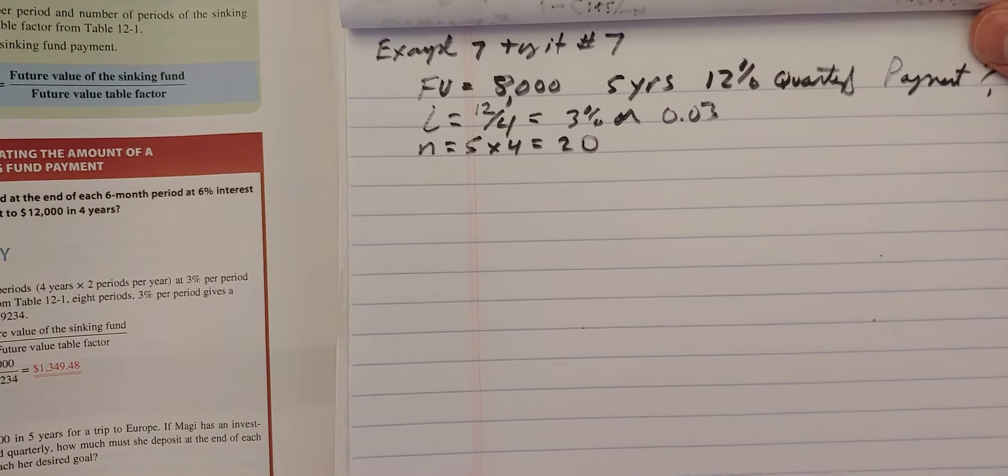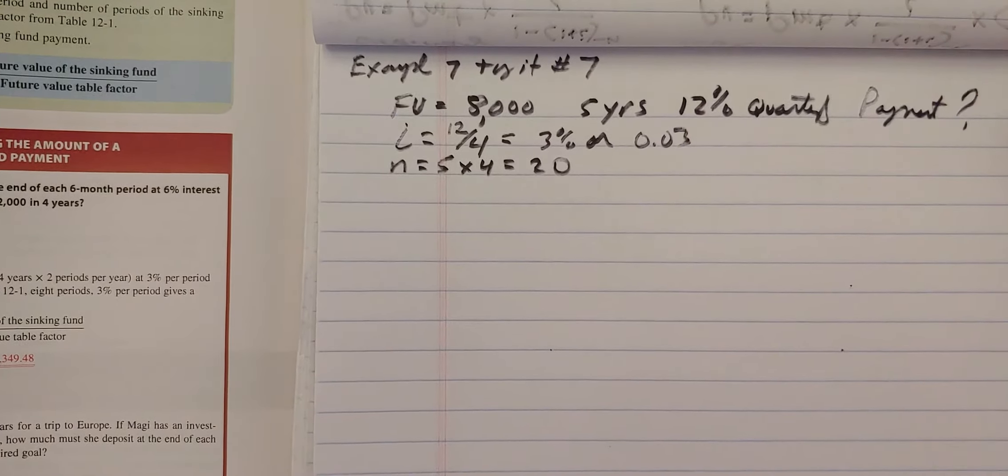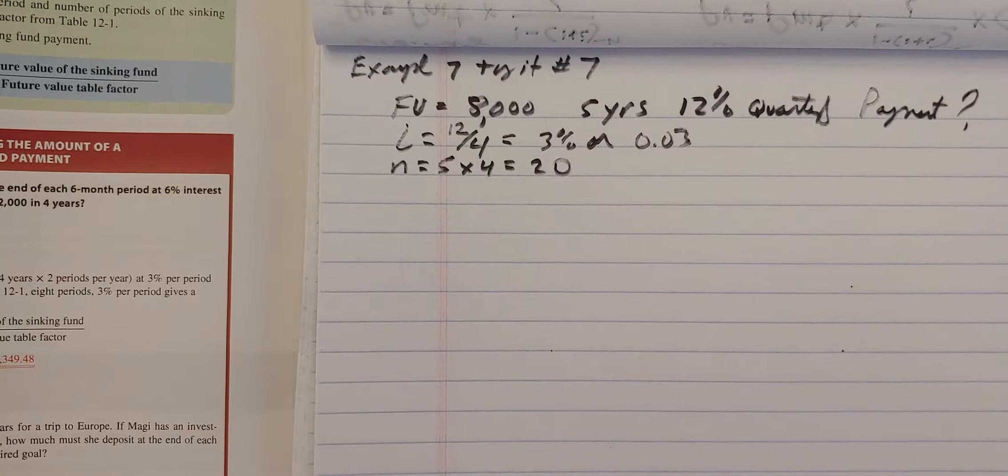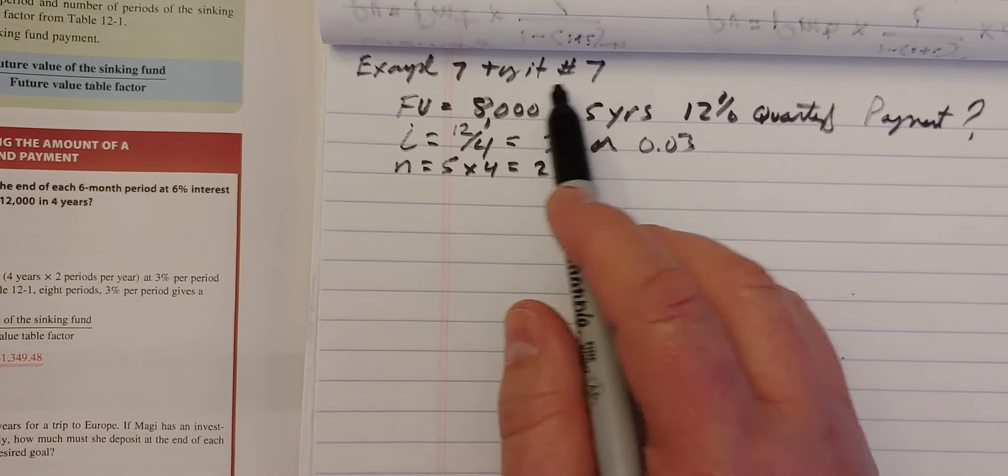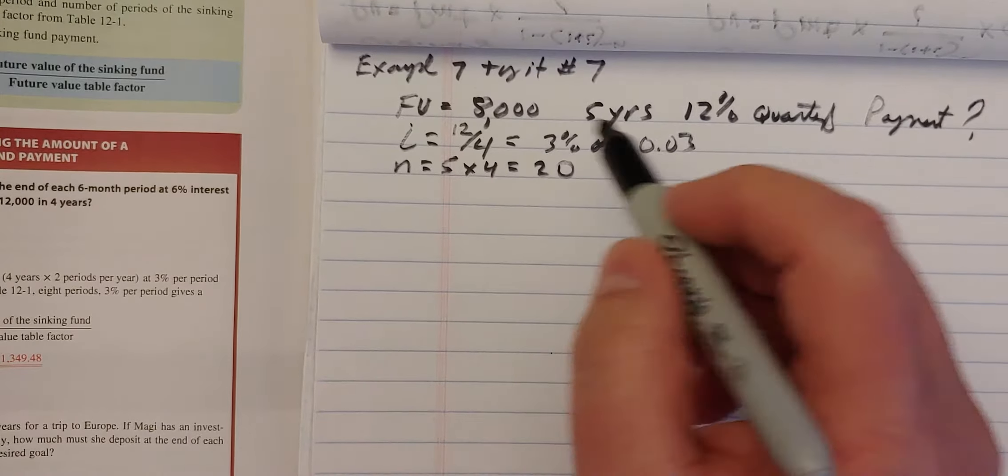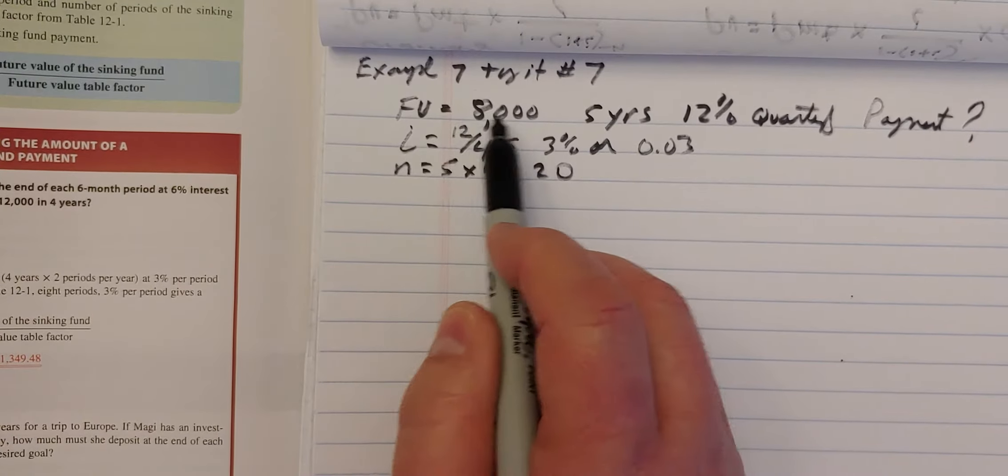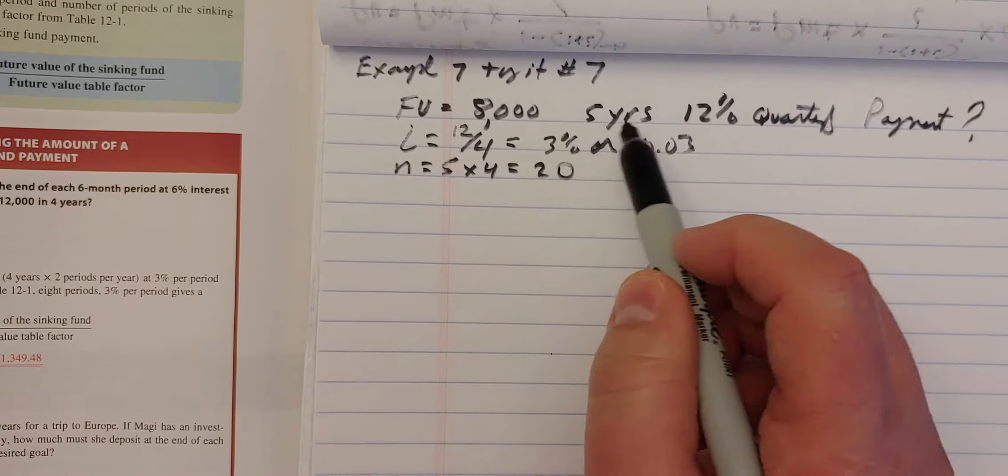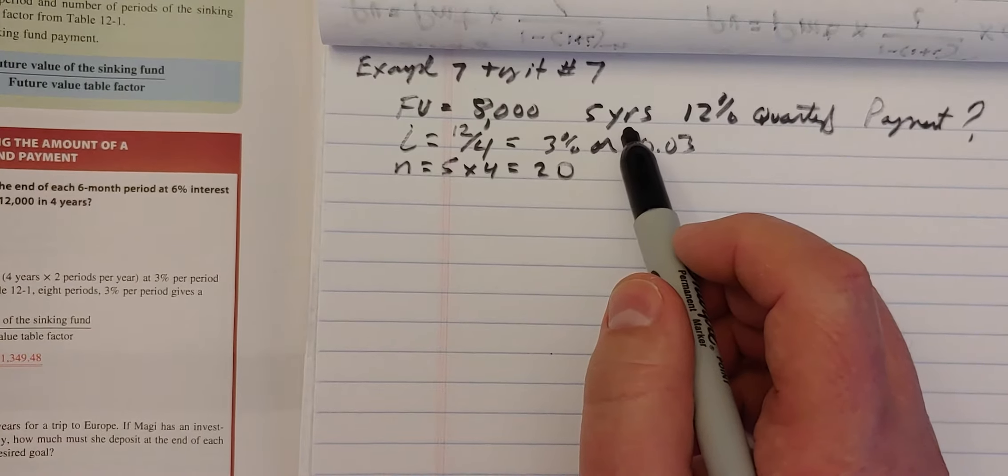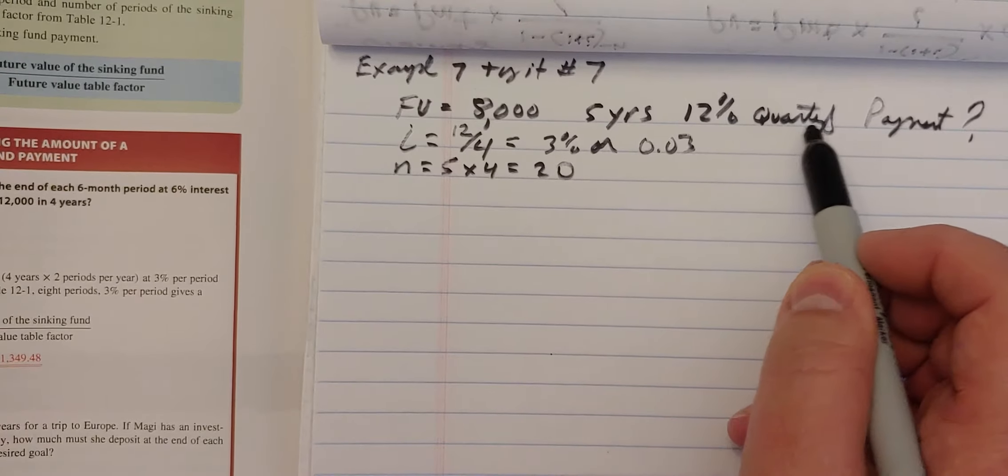I hope you had a chance to go over that. As we come back, the parameters that we were given in the try it exercise, number 7 on page 388, was you needed a future value. Maggie needed a future value of $8,000 in five years. And she can save at 12% quarterly.